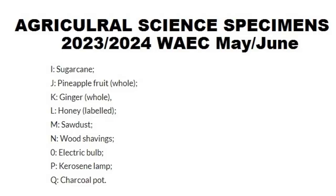Specimen M is sawdust. Specimen N is wood shavings. Specimen O is an electric bulb. Specimen P is a kerosene lamp. And specimen Q is a charcoal pot. From these specimens you can tell that questions will come from poultry farming topics.